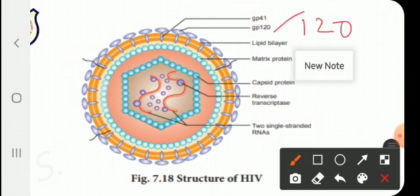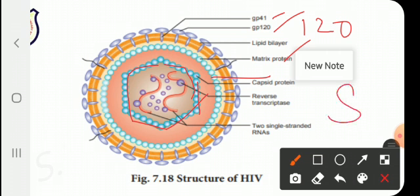Number one: inner layer of the spikes — GP, glycoprotein 41. So, matrix protein is the third layer. On the hexagonal shape inside is the capsid protein.